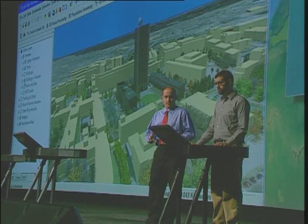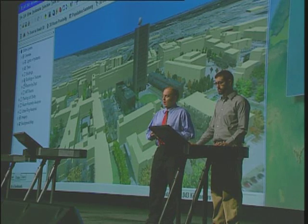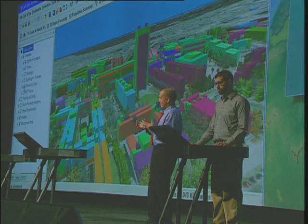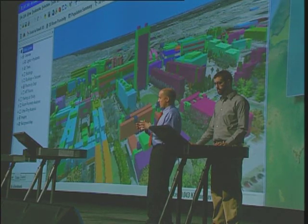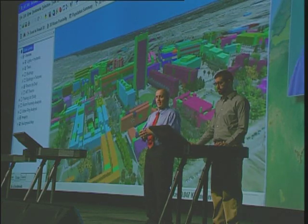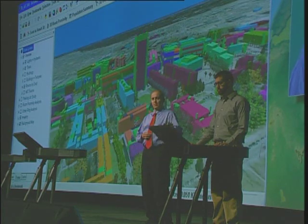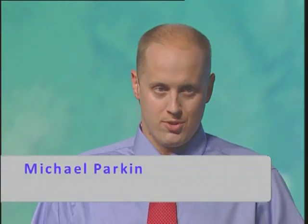GIS is the natural integrator for this, and what we've done is create a process that's taken our interior spaces, brought them inside the buildings, and allowed us to view departmental trends across the campus. MIT has a lot of laboratories and offices, but we also have a lot of residences and classrooms and other uses that are spread across the campus.